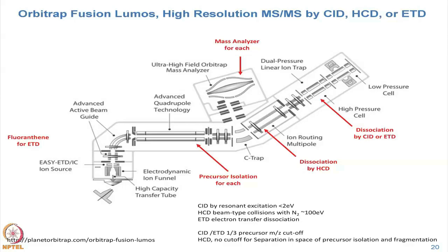This instrument, the Fusion Lumos from Thermo, takes in ions, isolates precursor ions, and then does MS/MS by three different techniques: higher energy collision dissociation (HCD), collision induced dissociation (CID), or electron transfer dissociation (ETD). Spectra can be measured in the Orbitrap at high resolution or in the ion trap at lower resolution but faster speed. In the CPTAC program for proteogenomic data, we generate only HCD spectra and collect mass spectra only in the Orbitrap.